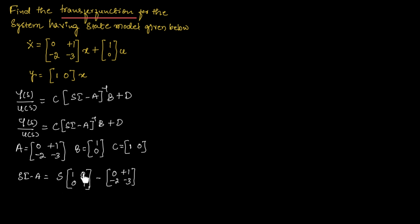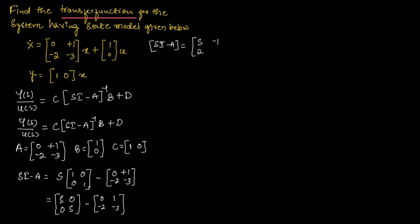Multiplying S with the identity matrix gives [S, 0; 0, S]. From this we subtract [0, 1; -2, -3]. Subtracting these two matrices, we get SI minus A as [S, -1; 2, S+3]. Here: S minus 0 is S; 0 minus 1 is minus 1; 0 minus (minus 2) is plus 2; and S minus (minus 3) is S plus 3.